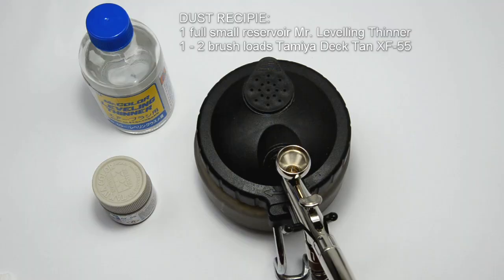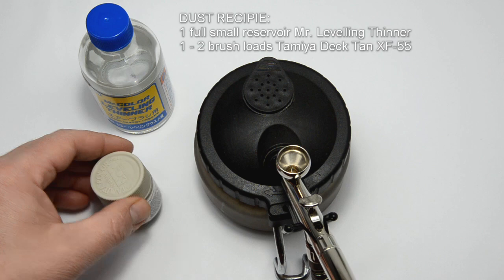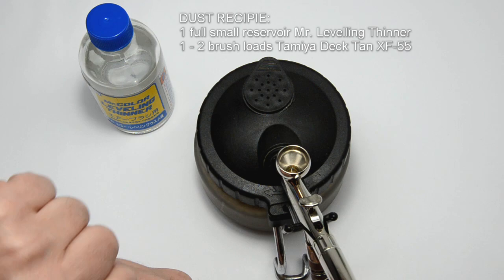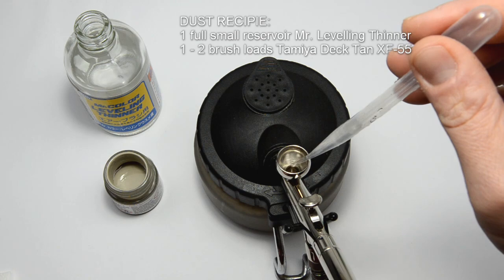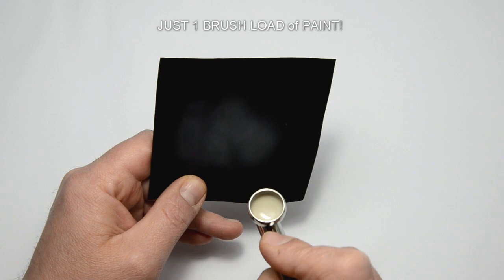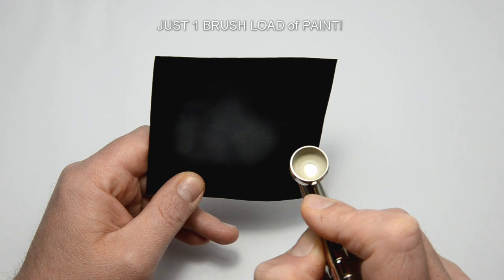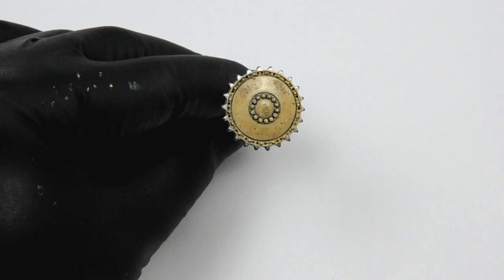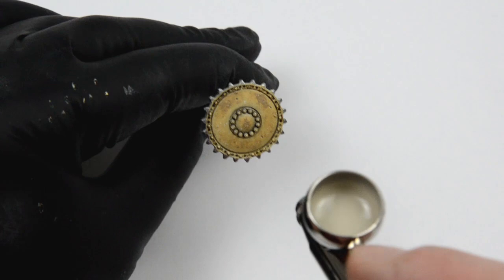Now, for the actual dust. I chose Tamiya deck tan and Mr. Leveling thinner, because I don't know how to control the ammo acrylics very well for now. My usual dust mixing ratio is one full small reservoir of thinner to one brush load of paint. I started with one brush load and the result was great, but for this approach with chipping fluid I needed a stronger mix, so I added another brush load of paint.